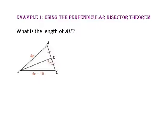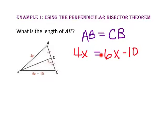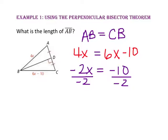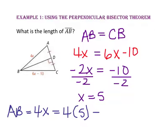In example 1, we will use the perpendicular bisector theorem. What is the length of segment AB? Segment BD is the perpendicular bisector of segment AC, so point B is equidistant from points A and C. Therefore the length of segment AB equals the length of segment CB. Since AB is 4X and CB is 6X minus 10, we substitute those values in. Subtracting 6X from both sides gives negative 2X equals negative 10, so X equals 5. Substituting into 4X, the length of segment AB is 20.